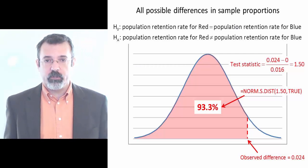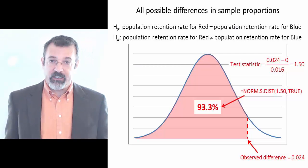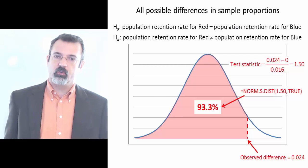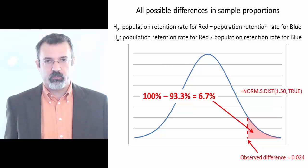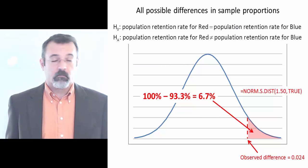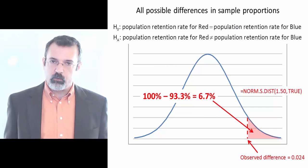The function returns the area to the left of the test statistic, or 93.3%. What we care about in this case is the area to the right of the test statistic, or 100% minus 93.3%, or 6.7%.